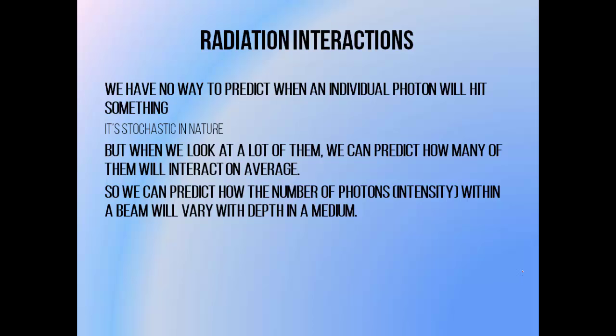In the last tutorial, we talked about how individual photons interact with matter. In this tutorial, we're going to be talking about whole beams — so how large collections of photons interact as they pass through something. You can't actually predict when an individual photon is going to hit something or how it's going to interact. It's what we call a stochastic process.